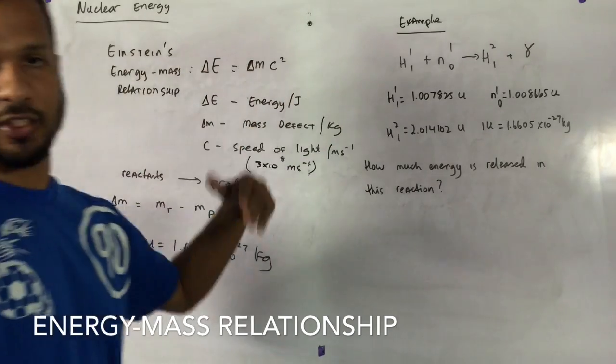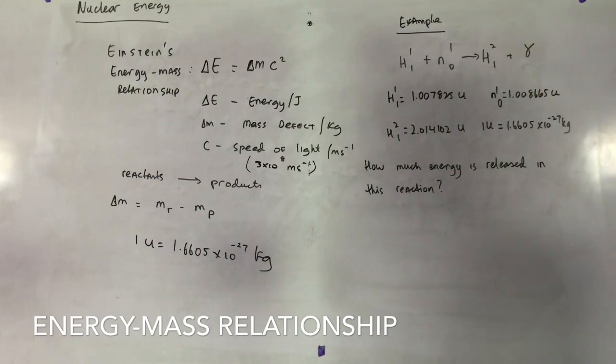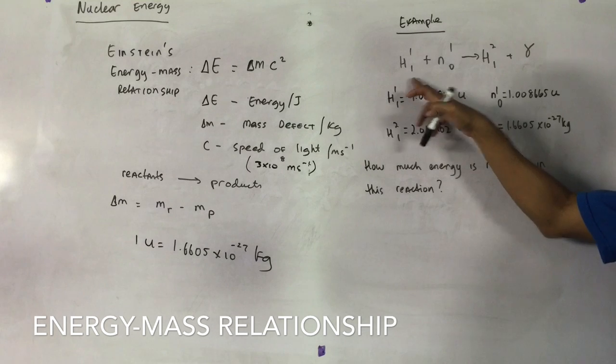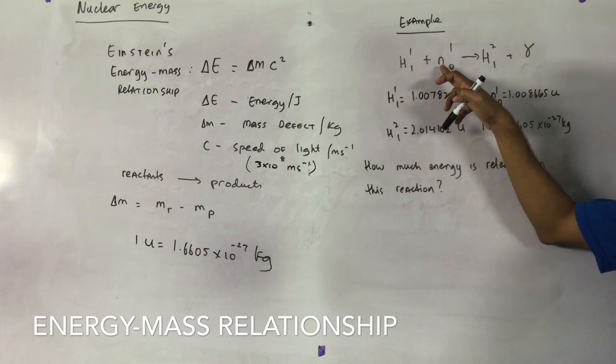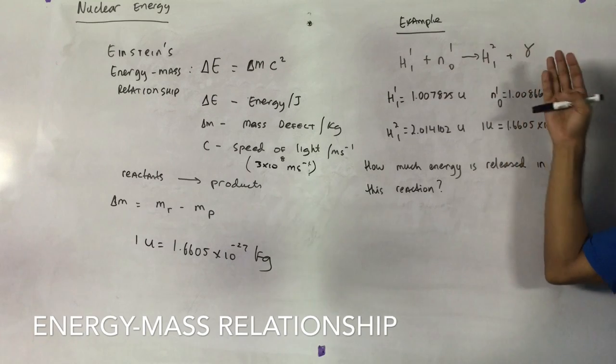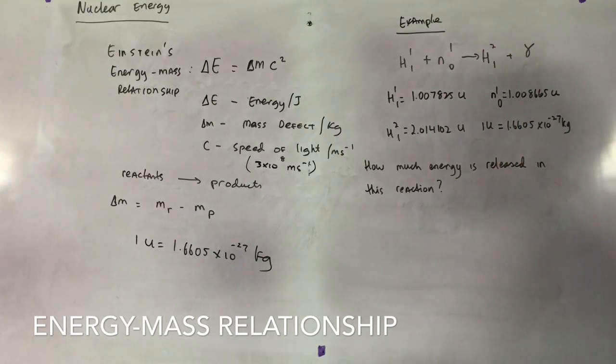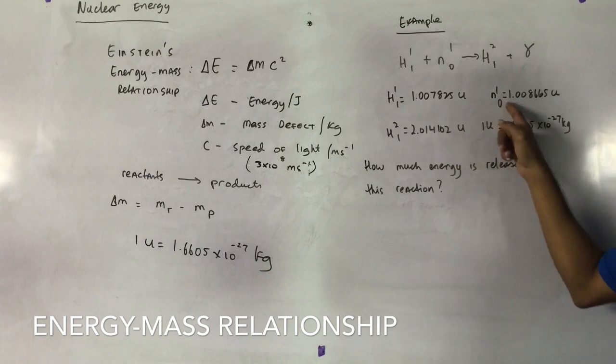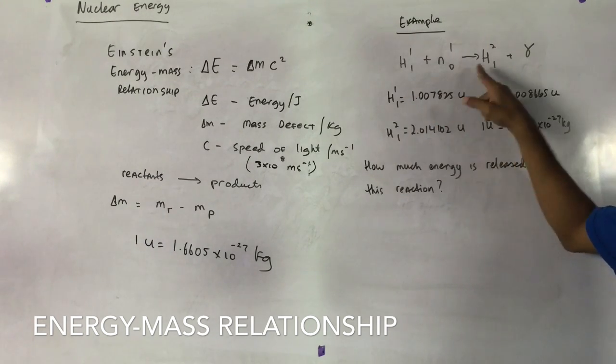So how do we find the energy for a reaction? Let's take a look at this example here. Well, if we look at this example, this reaction is a hydrogen atom reacting with a neutron. Hydrogen with a neutron gives you this atom plus gamma radiation. So these are the masses, the atomic mass of the hydrogen, of the isotope of hydrogen.